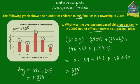So this is approximately equal to 1.9, because we round up. That means that in 2009, there were 1.9 children per family in the township. It's just putting the numbers into the formula and you get the answer.